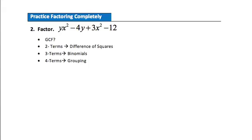Practice problem 2. We have a polynomial with four terms, so we're thinking factoring by grouping. But first we check for a greatest common factor. y works in the first term, x works in the first and third — there's not really a greatest common factor across all terms, so we go straight to factoring by grouping. Looking at the first pair, yx squared minus 4y, the common factor is y. Factoring y out front gives us y times the quantity x squared minus 4.